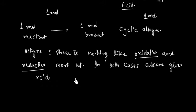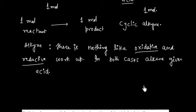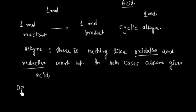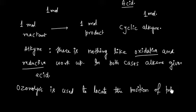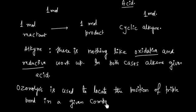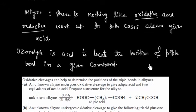Basically, the reaction of ozonolysis can be used to locate the position of the triple bond. So ozonolysis is used to locate the position of the triple bond in a given compound. For example, let us discuss this problem.